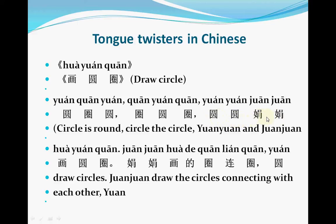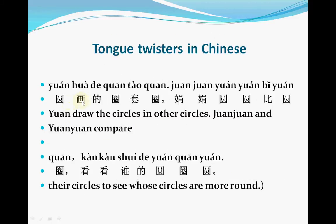圆圆 and 圈圈 are names for little girls. 圆 means circle. 画 means draw. 圈 is also draw. 套 means inside of the circle. 比 means compare. 看看 means to see, to look. 圈圈 is also a name, and 圆 is also circle.